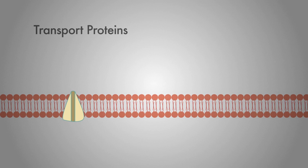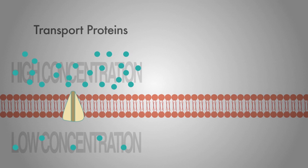Transport proteins are specifically tailored to certain types of solutes that can only move those molecules down a concentration gradient from an area of high concentration to an area of low concentration.